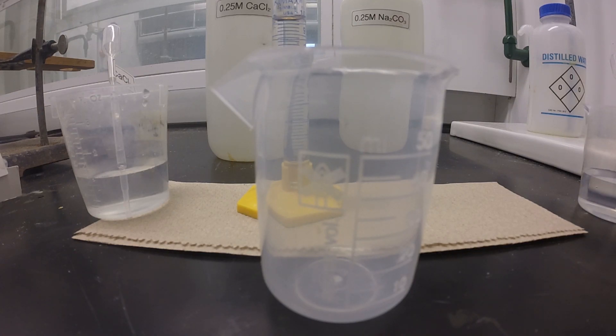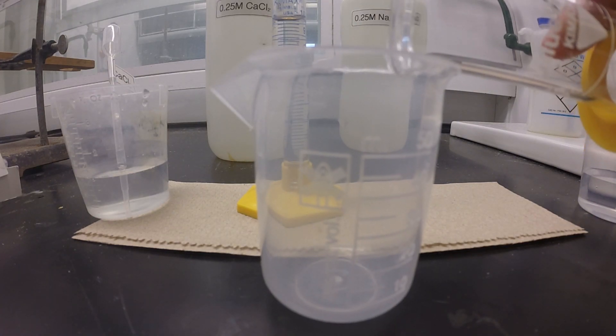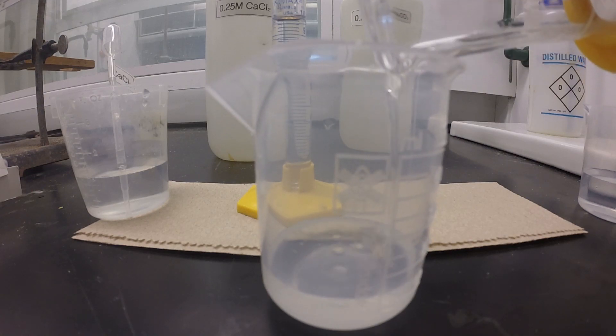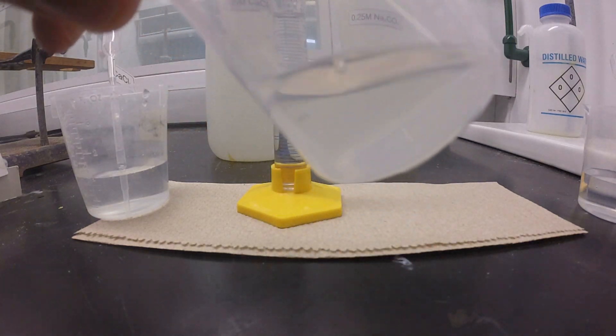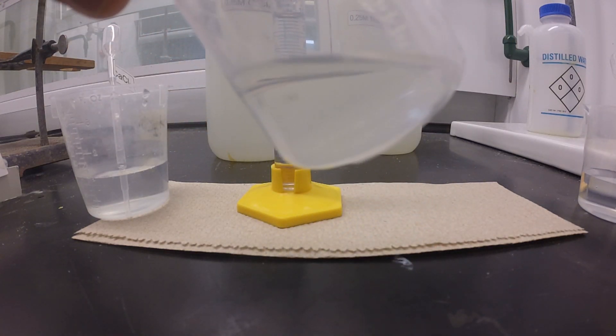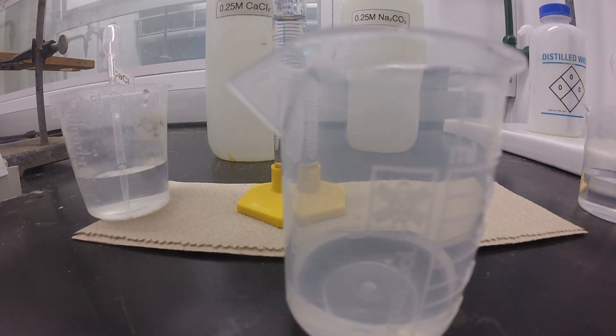Now that the filter paper is draining, we're going to do the reaction. First I'm going to add the 15 mL of the sodium carbonate - you can see again that this is a clear solution, there's no precipitate in there. Then we're going to add the 10 mL of the calcium chloride.